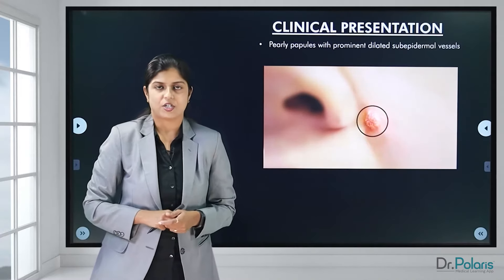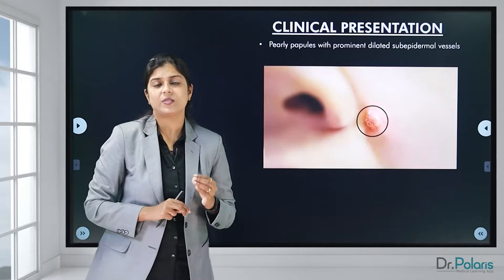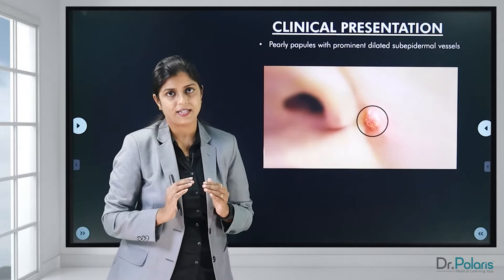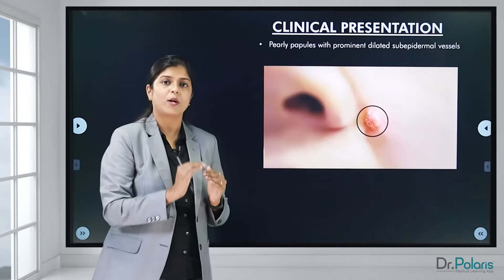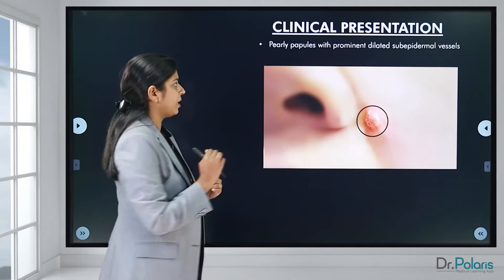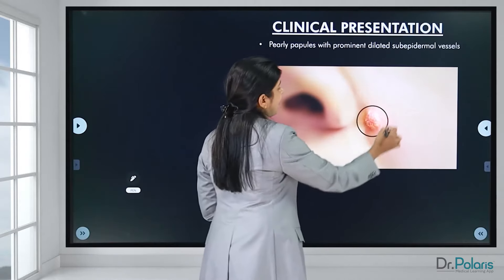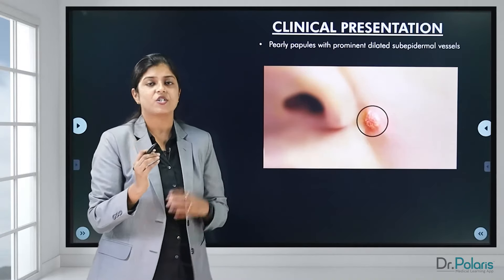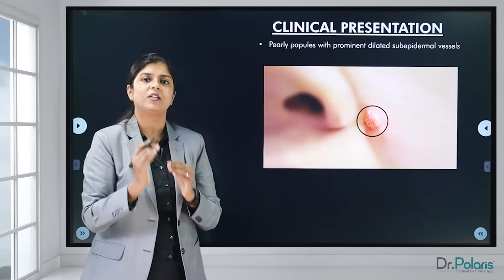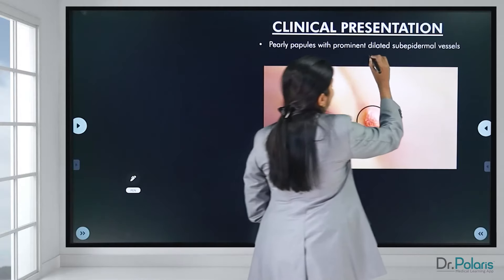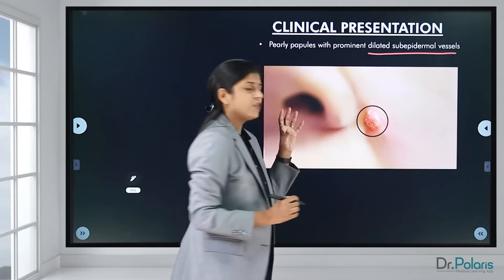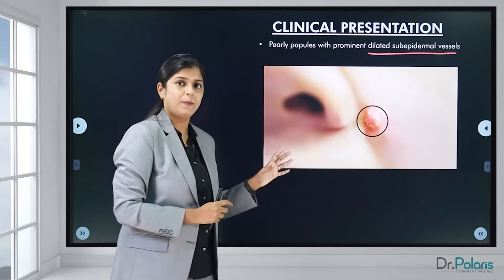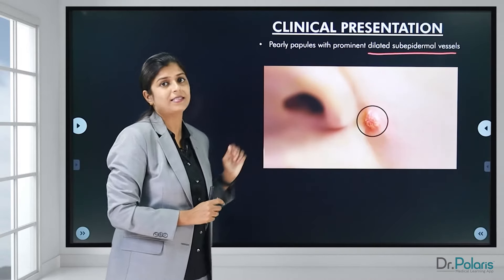Clinically, basal cell carcinomas most commonly appear on the face above the line drawn between the angle of the mouth to the pinna. They present as small pearly papules with dilated epidermal vessels visible underneath. This pearly papule appearance in this location is the classical clinical picture of a basal cell carcinoma.